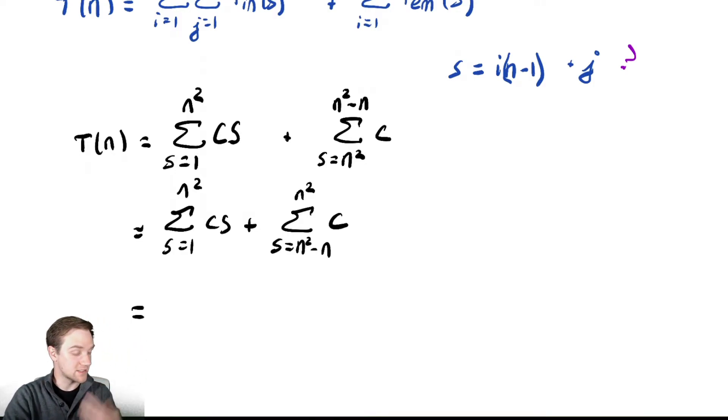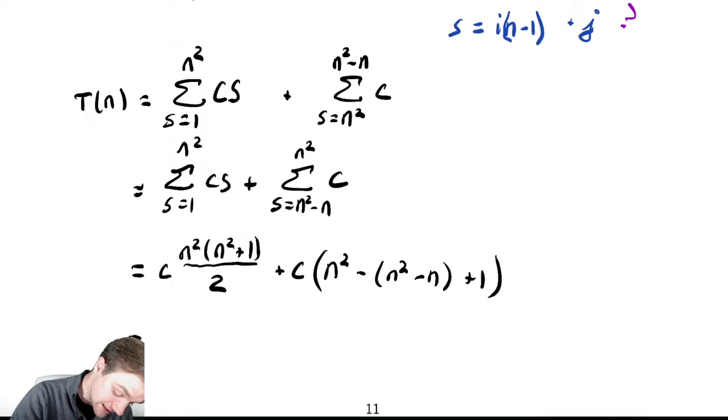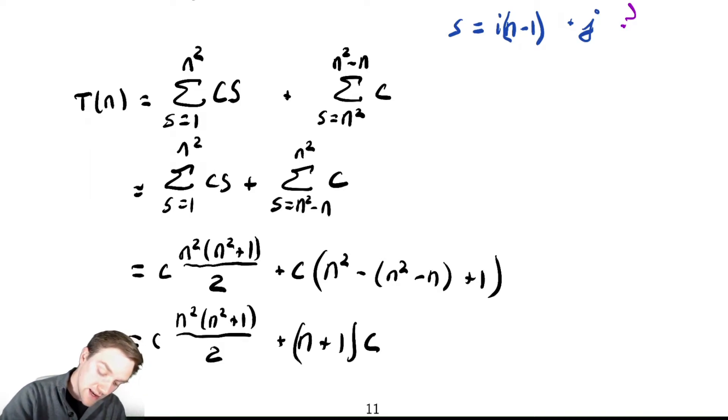This is equal to, that first one is an arithmetic sum. So that converges to C times n squared times n squared plus 1 all over 2. Plus the next one is C times n squared minus n squared minus n plus 1. Notice some simplification happens in that last term, so we have C times n squared times n squared plus 1 all over 2. Plus the n squareds cancel, and I'm left with n plus 1 times C. And all of this is in theta of n to the fourth coming from our first term here. So this is how efficient this is with this one implementation.